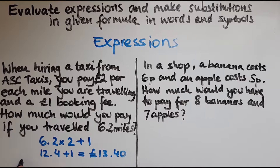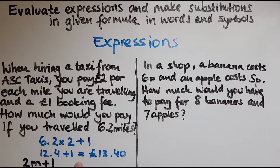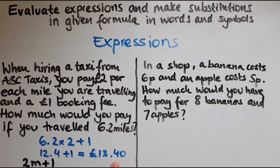So 2 lots of m — miles multiplied by 2 — plus 1. We'd do the same thing: work it out by replacing m with 6.2 miles. So 2 lots of 6.2 plus 1, and that gives us 13.4, or 13 pounds 40 pence.